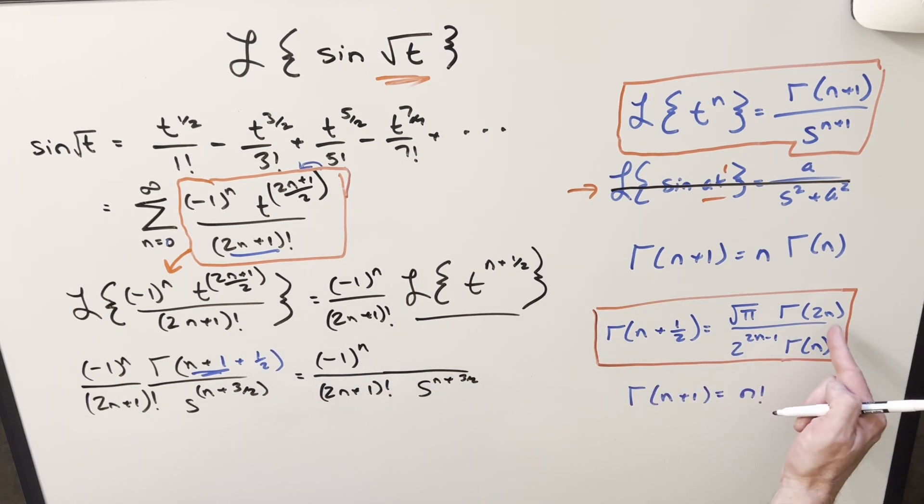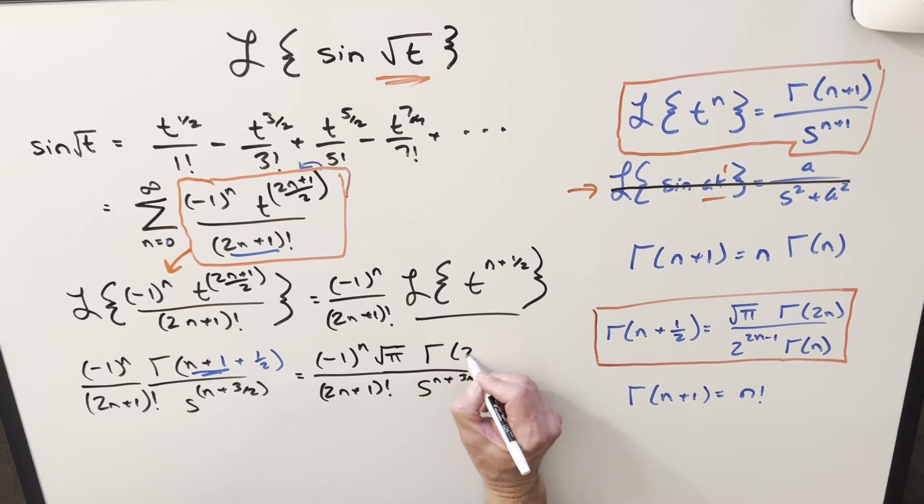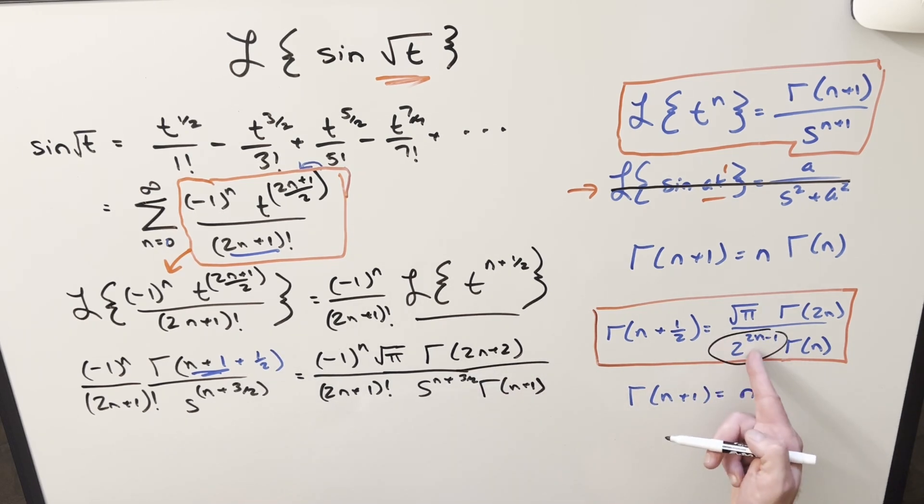Then just using this, but our input where we have n here, everywhere is going to be n plus 1. So this is going to become square root of pi. Plug n plus 1 in here, this becomes gamma of 2n plus 2. And then this one here becomes gamma of n plus 1. And then I just need to squeeze in this part too. Again, if you plug in n plus 1 here, this transforms into 2 to the 2n plus 2.